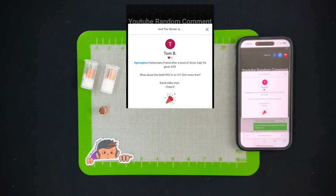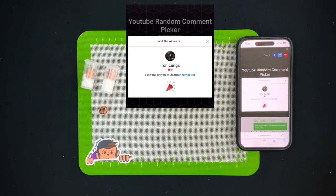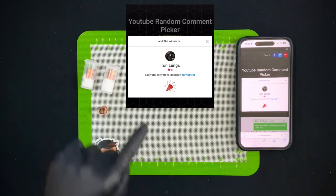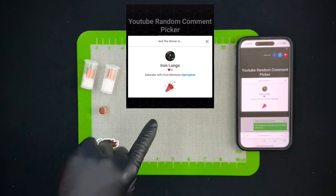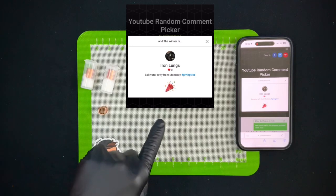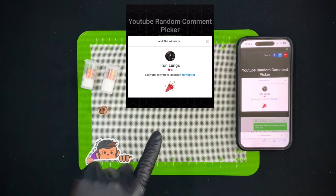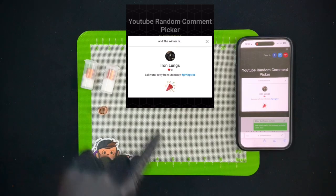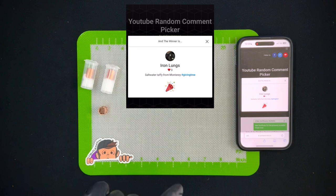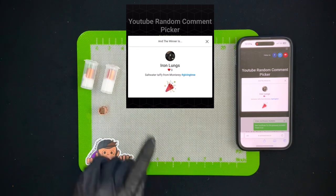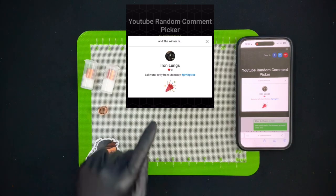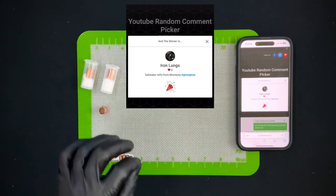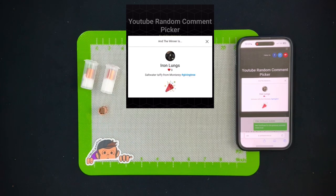Last up, Iron Lungs, salt water taffy from Monterey. Wow, in order to get this reference you have to be one thing and that's a Californian, because Monterey is a very specific place in California near the ocean. It's a very small, beautiful town. If you're ever visiting it's definitely a spot to go to, but Monterey does have amazing salt water taffy and it's certainly something to try in a lifetime. Iron Lungs, great choice and hope you enjoy your FMJ.